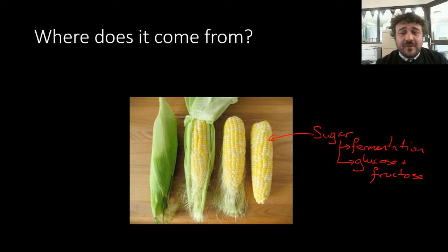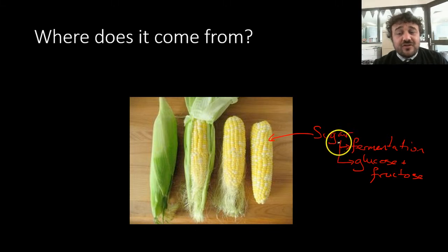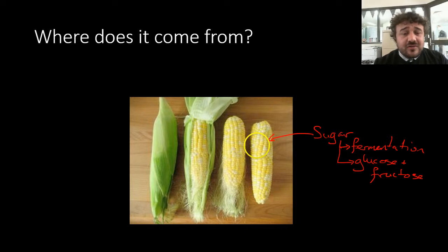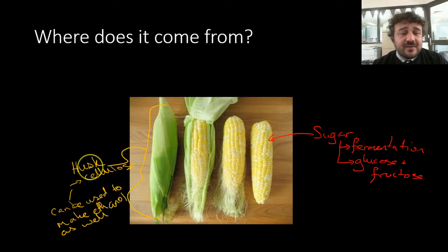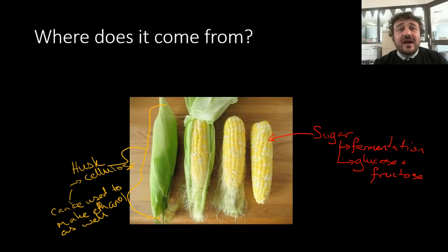Where does it come from? Essentially, it's fermented. Ethanol from corn starts out one of two ways. There's sugar — the sugar is then fermented using glucose and fructose. Alternatively, you can use the husks. The husk is cellulose, and by hydrolyzing it, we can use cellulose to make ethanol by breaking it down to sugar. You hydrolyze it down into glucose, and then from there you go on to make your ethanol.